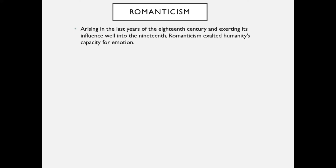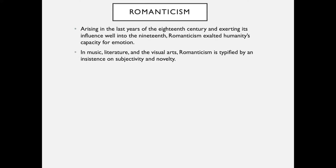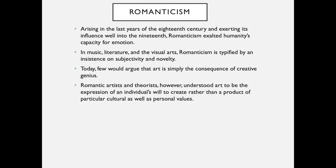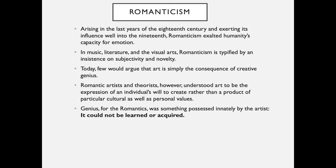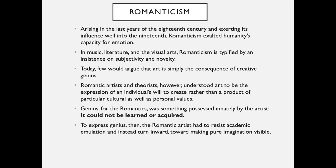Arising in the last years of the 18th century and exerting influence well into the 19th, romanticism exalted humanity's capacity for emotion. In music, literature, and the visual arts, romanticism is typified by an insistence on subjectivity and novelty. Romantic artists and theorists understood art to be the expression of an individual's will to create, rather than a product of particular cultural and personal values. Genius, for the romantics, was something possessed innately by the artist — it could not be learned or acquired. To express genius, the romantic artist had to resist academic emulation and instead turn inward, making pure imagination visible.